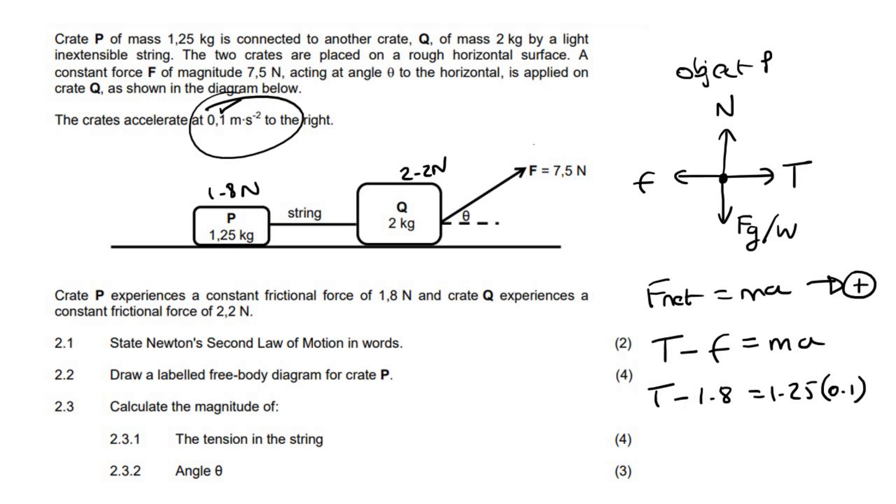Usually they don't give us the acceleration. Then you have two unknowns, tension and acceleration. But in this example they gave us the acceleration, but then they haven't given us this angle. So it would have been too difficult if they didn't give us this, because then you would have three unknowns. Now if we go solve, we get 1.25 multiplied by 0.1 plus 1.8. And so if we go work this out, we get 1.93 newtons.